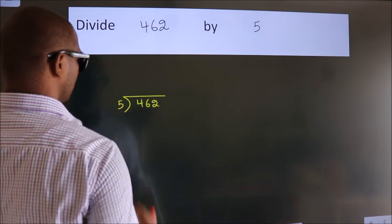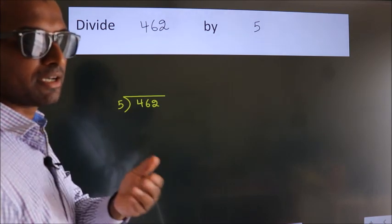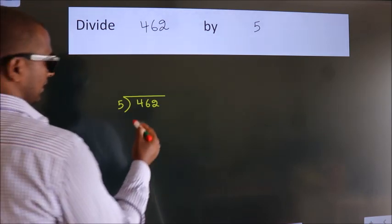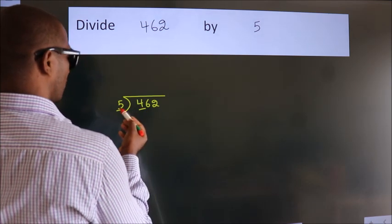5 here. This is step one. Next, we have 4 here. 4 is smaller than 5.